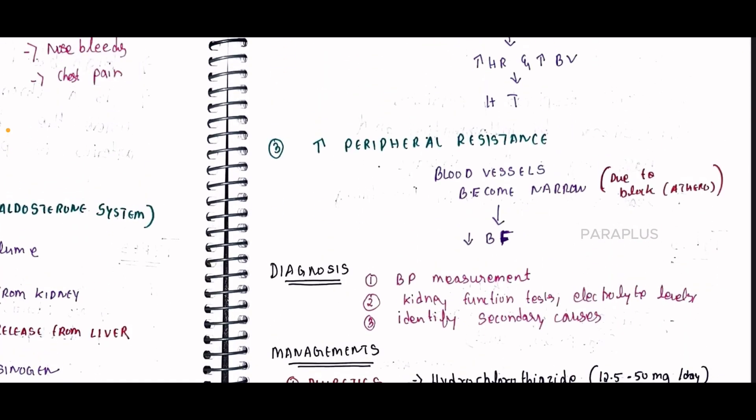The next pathway is peripheral resistance — an increase in peripheral resistance. The blood vessels become narrow due to atherosclerosis or plaque buildup, and they are constantly constricted. There is flow resistance and decreased blood flow due to narrowing, and this leads to an increase in hypertension. These are the three types of pathophysiology for hypertension.